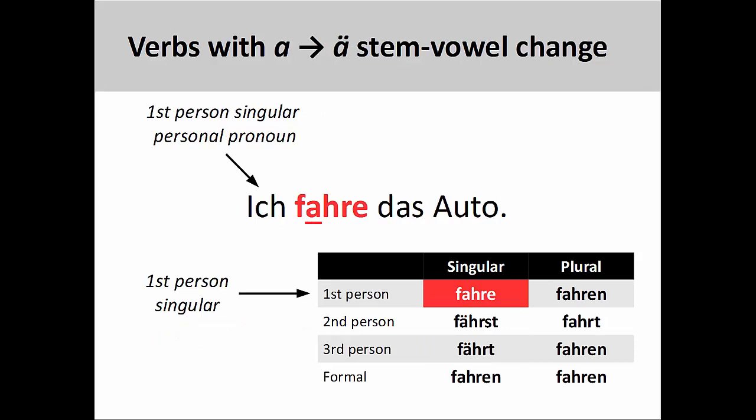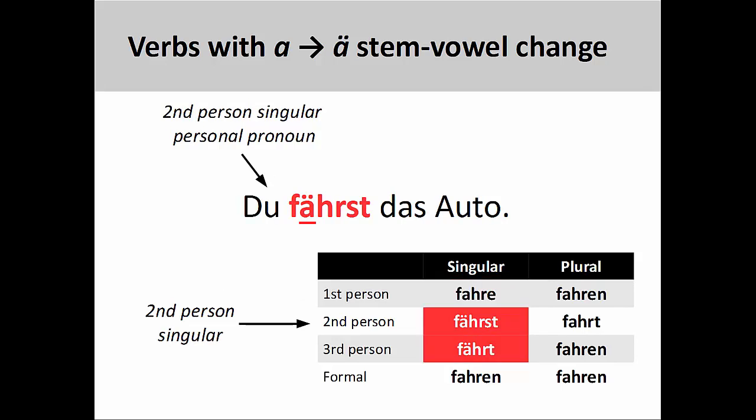The third group has a stem-vowel that changes from a to a-umlaut. So although the first-person singular form of fahren would be fahre — as in 'ich fahre das Auto' (I drive the car) — the second-person singular form would be fährst, as in 'du fährst das Auto' (you drive the car). The third-person singular form would be fährt.